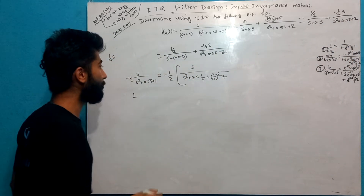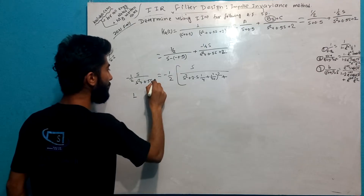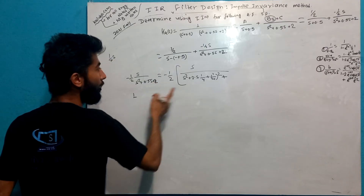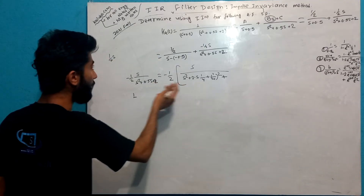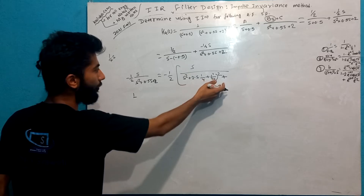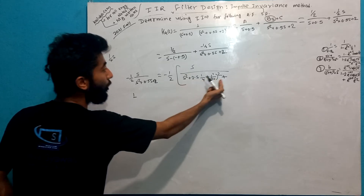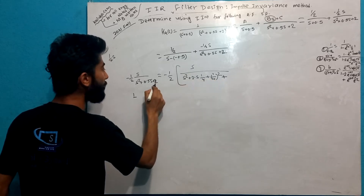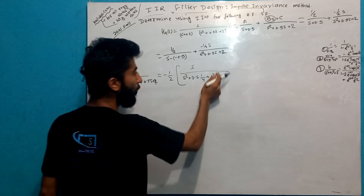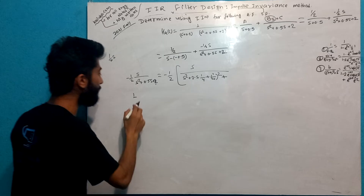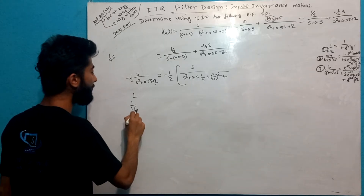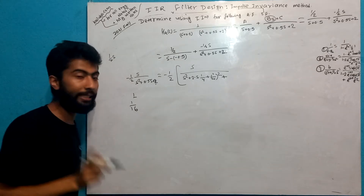This is 2. So what do we have? I already knew it was 2. I calculated 1 by 4 squared gives 1 by 16.